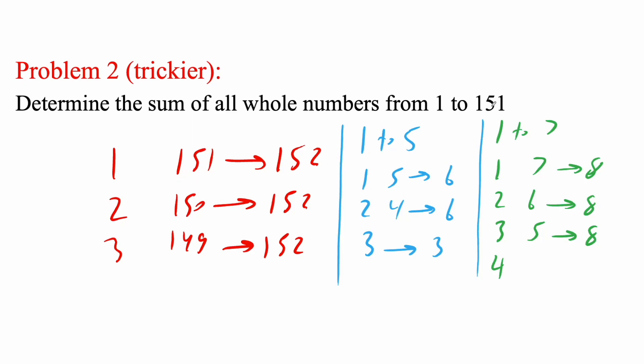So if I had 1 to 150, that's 75 pairs. So I'm going to put 75. I'm going to multiply by 152. But I need to address that last median number. So we take half of it. So 152, we divide it by 2.